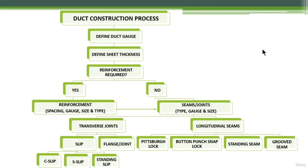Let's go through the construction process step by step. First, you define the duct gauge and duct pressure classification. Once you've specified the duct gauge, you can obtain the sheet metal thickness. After that, you determine whether reinforcement is required or not. If reinforcement is not required, you proceed to define and specify the seams and joints connecting the duct pieces.